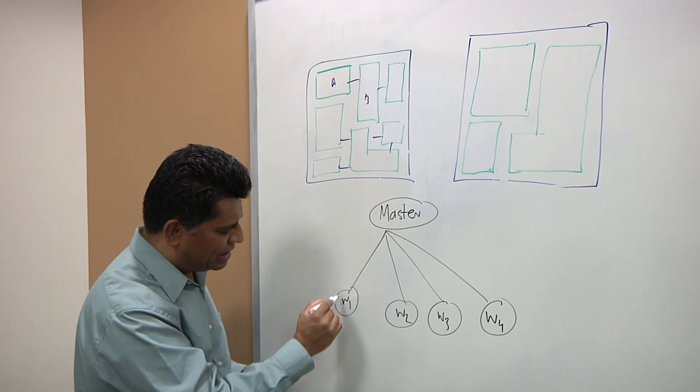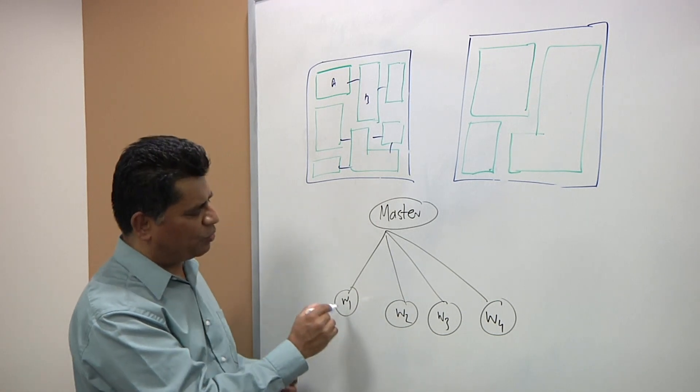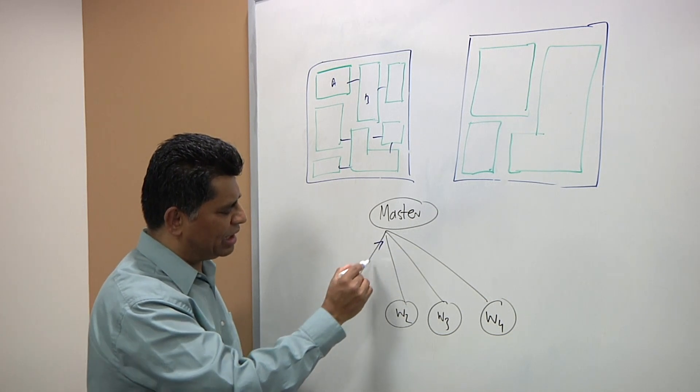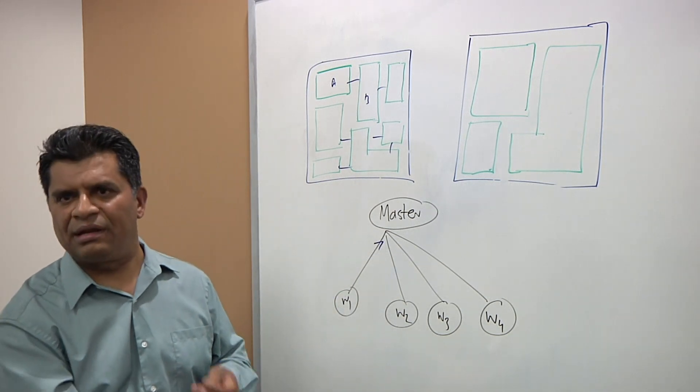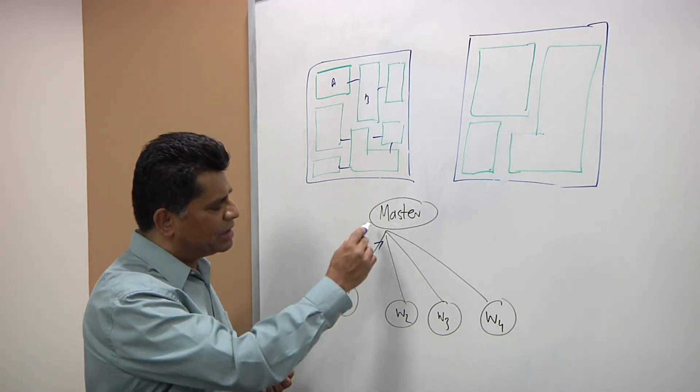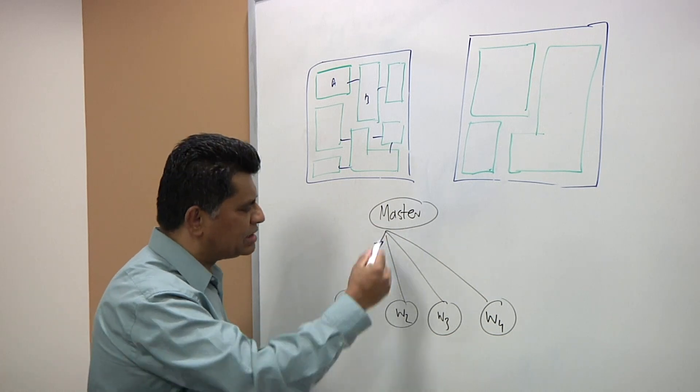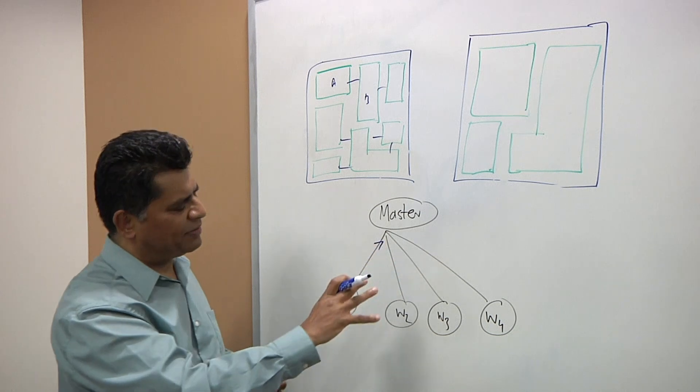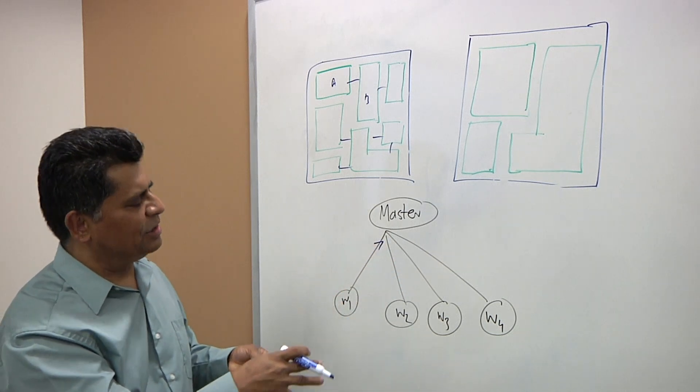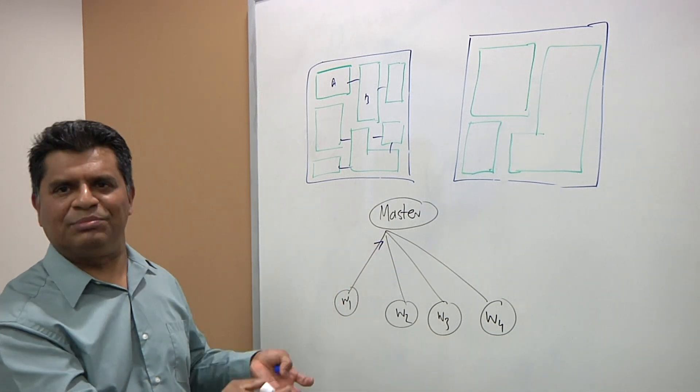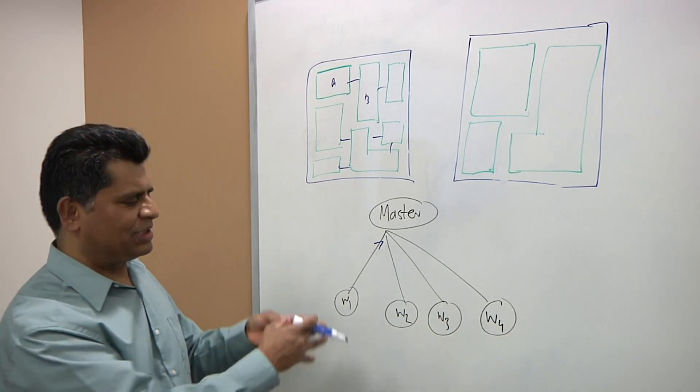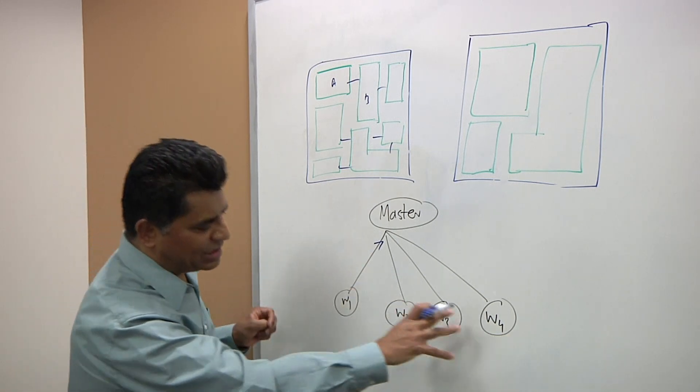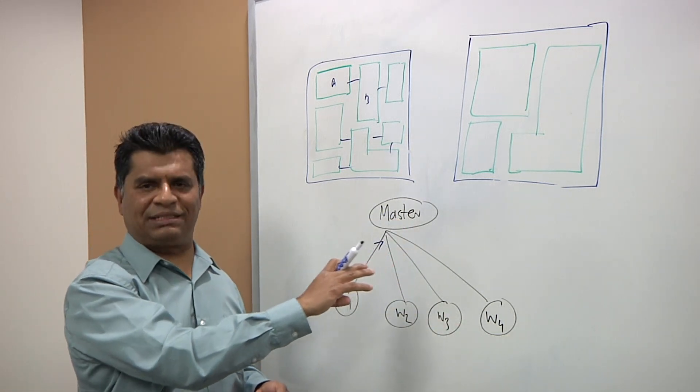So whatever changes are done by this processing at worker one, the data is communicated in real time as they happen. So as a result, master is continuously aware of what's happening. So it's like a master coordinator. So in fact, this technology is called coordinated and distributed design implementation. So it's distributed, it's asynchronous, but it is coordinated by master.